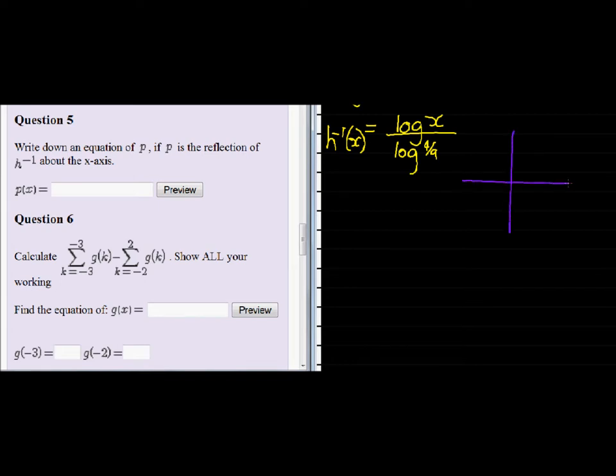Well, here's the x-axis. Any point x, y that's reflected in the x-axis becomes the point x, negative y.